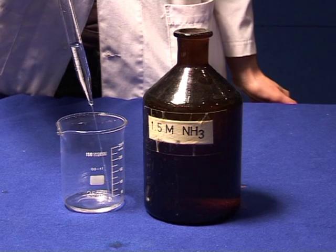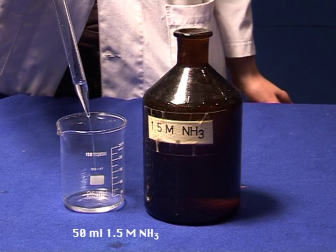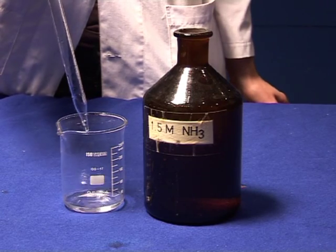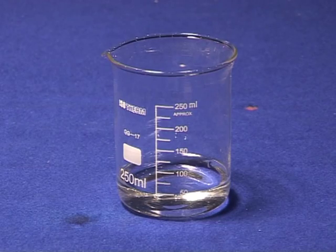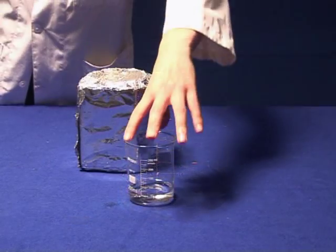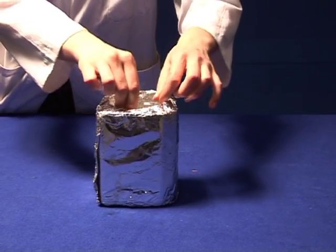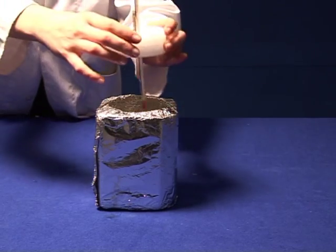Neutralization: Pour 50ml of 1.5 molar ammonia into the beaker. Place this beaker into the insulated cup and collect temperature at 30 second intervals for 5 minutes.